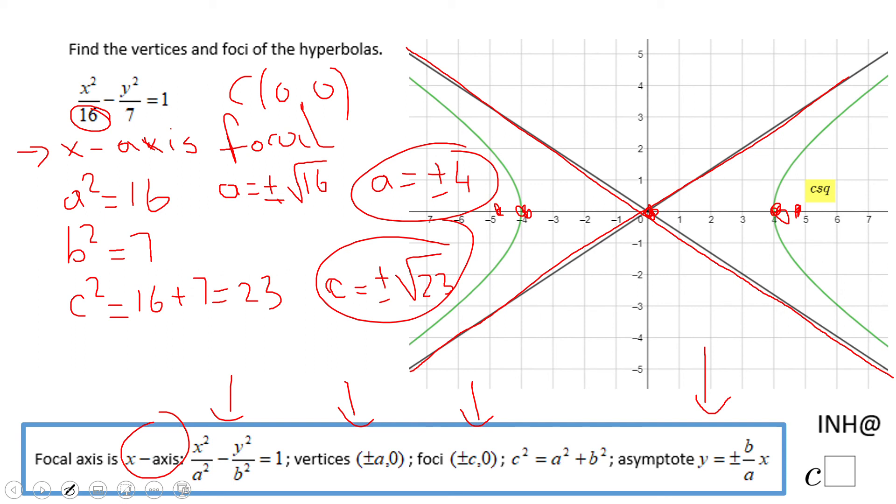The equation will be, if in case you need it, plus or minus b, that will be square root of seven, over a, that will be four, times x. In case you need this asymptote.